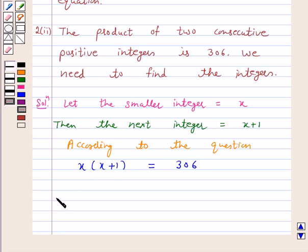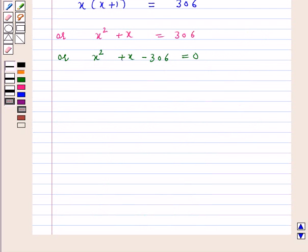Or, x squared plus x equals 306. Or, x squared plus x minus 306 equals 0.